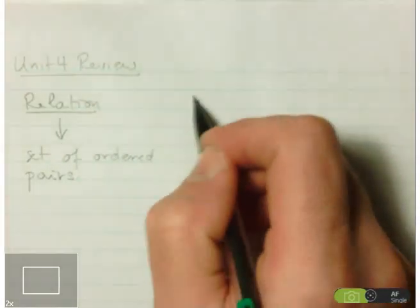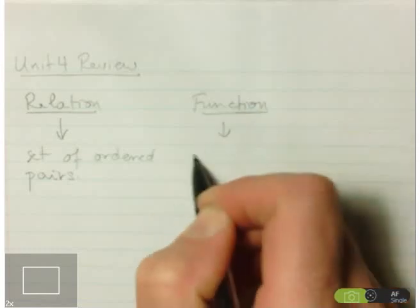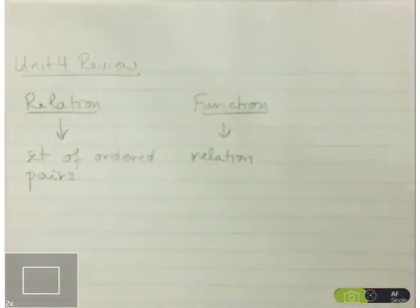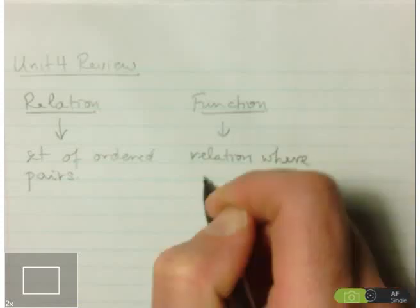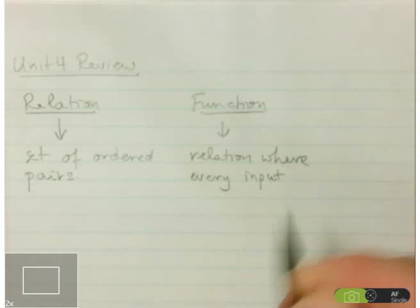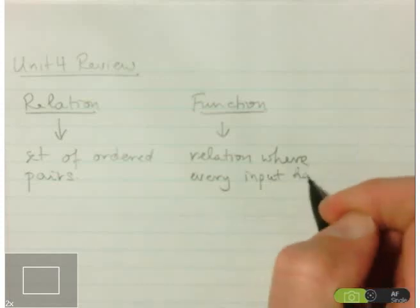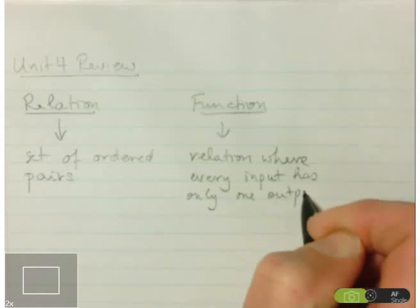Now there's a special type of relation that we talked about, which is called a function. A function is just a relation, but it's a relation that has one very important quality. For every input, there can be only one output. So we'll say where every input, which we think of as our x values, has only one output, and the output being our y values.